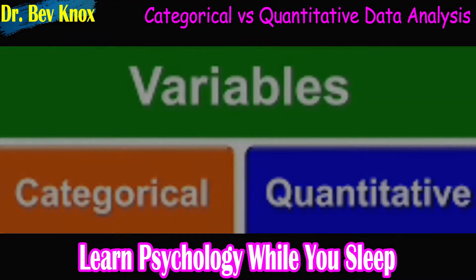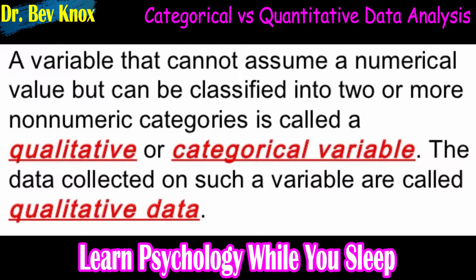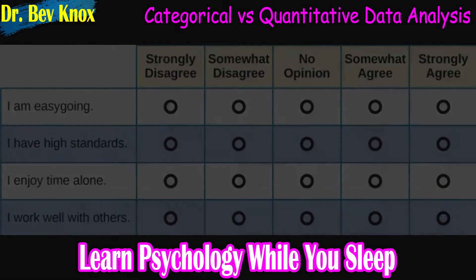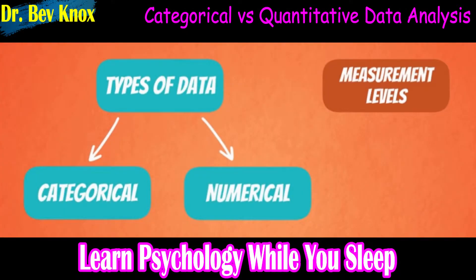A categorical variable consists of a set of non-overlapping categories. The measurement scale of a categorical variable is ordinal if the categories exhibit a natural ordering, such as opinion variables with categories from strongly disagree to strongly agree. The measurement scale is nominal if there is no inherent ordering.